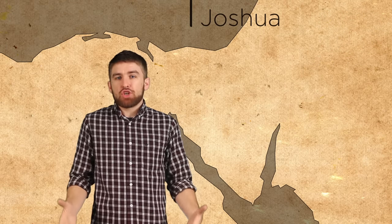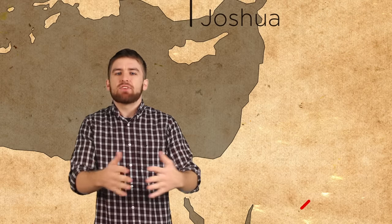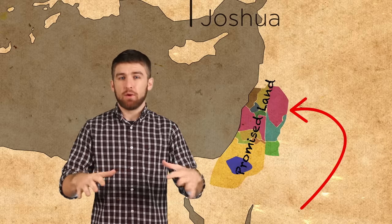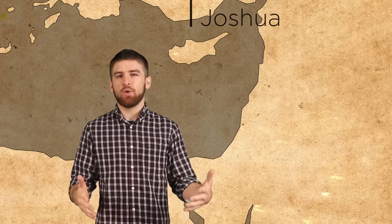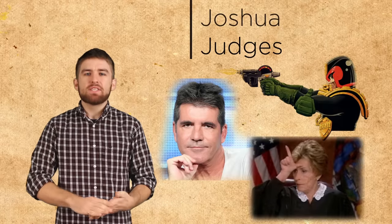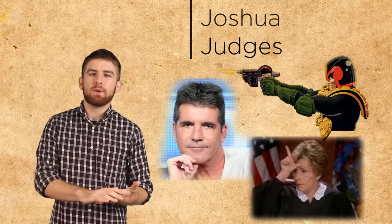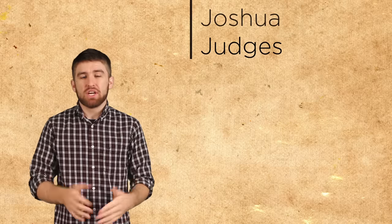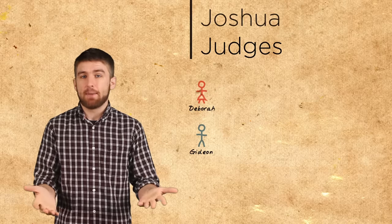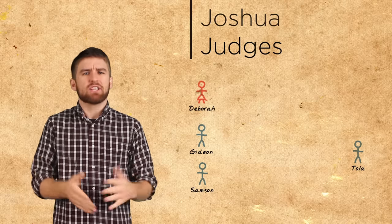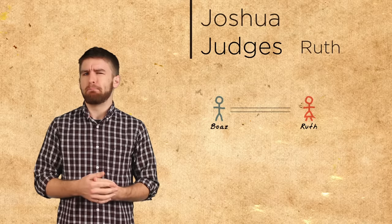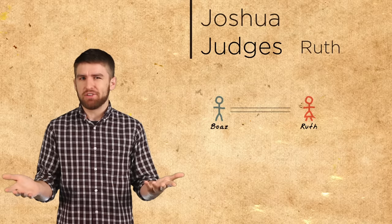Moses dies and Joshua picks up the reins and he leads the Israelites back into the promised land. The land is divided up according to the 12 tribes. Next comes the period known as the Judges. God appoints a series of leaders to help guide his people and lead them against the enemies that oppose them. The most well-known judges are Deborah, Gideon and Samson, but there were actually many others. Ruth also appears during this time, but she wasn't a judge or even Jewish.